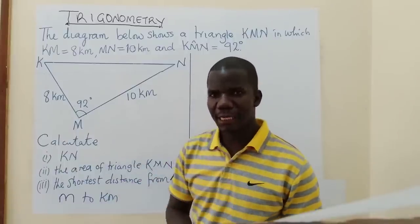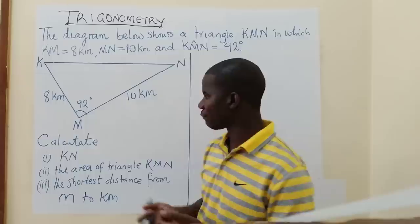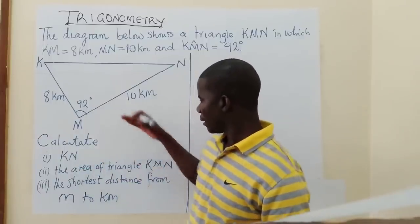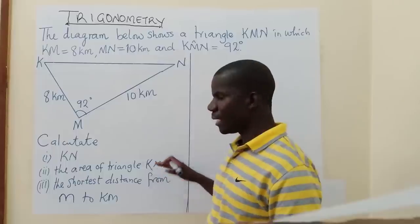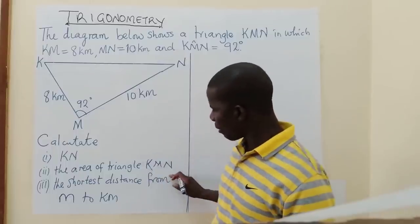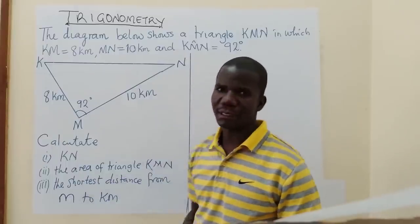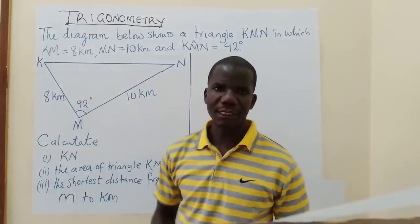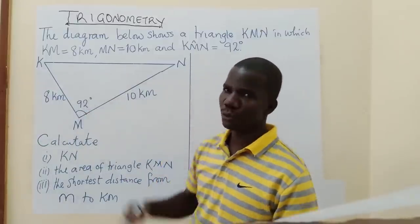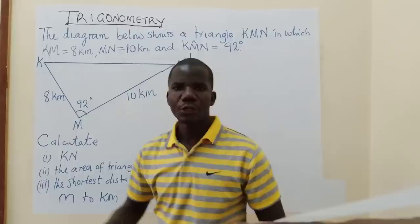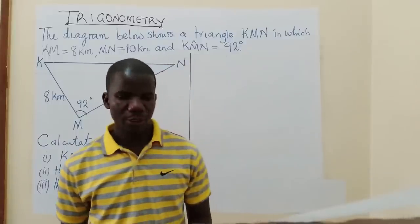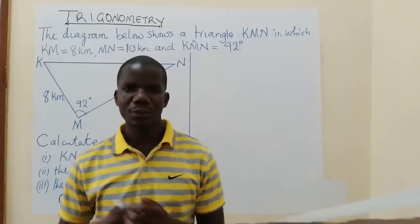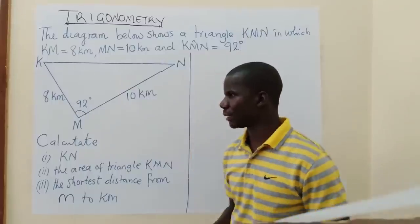If you want to get the maximum benefit from this presentation, you can look at these individually: this is cosine rule, this is the area of a non-right-angle triangle, and this is the shortest distance. You can also look at those presentations as we have presented them one by one, then come to this consolidated one that puts the aspects together. So now we want to look at the steps that are supposed to be carried out in order to get to the final answers of these questions.